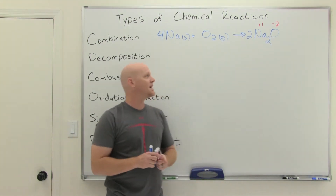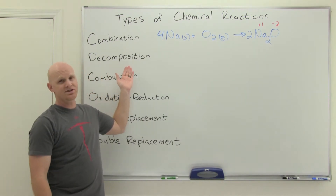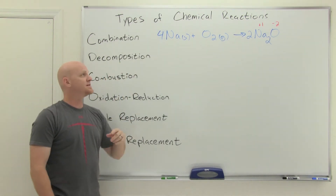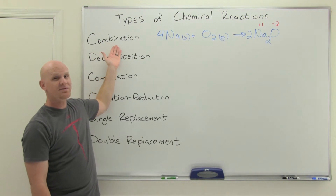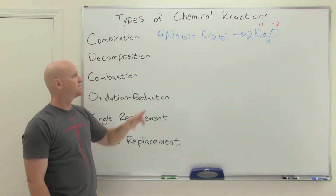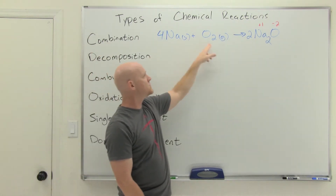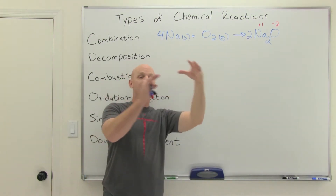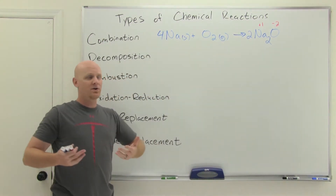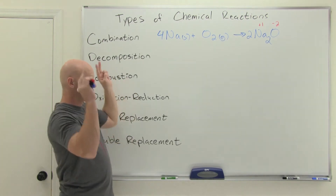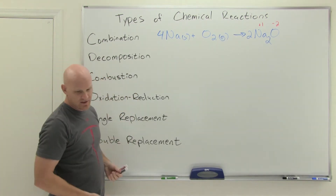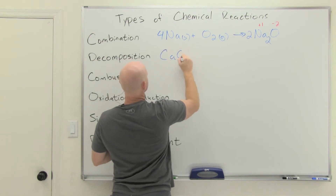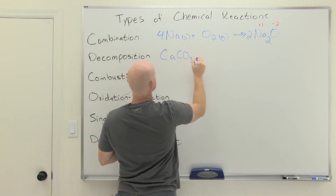The next kind of reaction is a decomposition reaction. For a decomposition reaction, it's pretty much often the reverse of a combination. Instead of having two or more things form one thing, now you have one thing turning into two or more things. The example on your handout involves calcium carbonate, CaCO3.